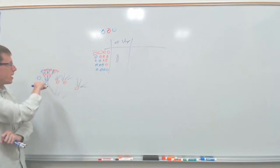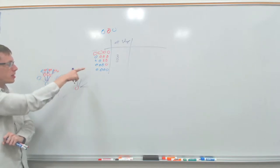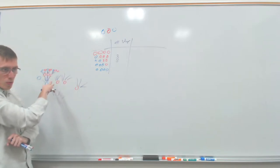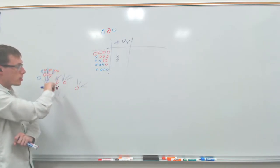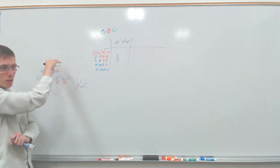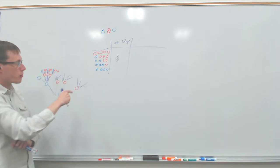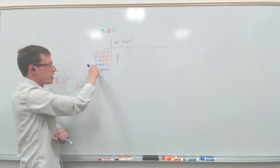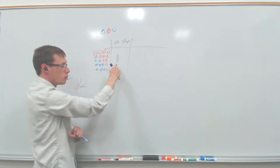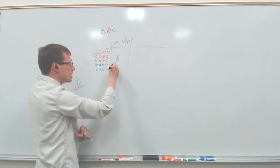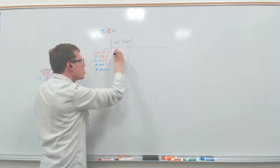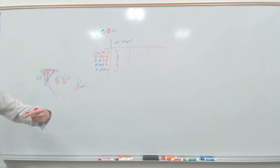For the three-blues one-red bag: three ways to get the blue on the first draw, one way to get the red, and three ways to get the second blue — so three times one times three equals nine. For the all-red and all-blue bags it was zero. We could also write these as probabilities by dividing by 64.